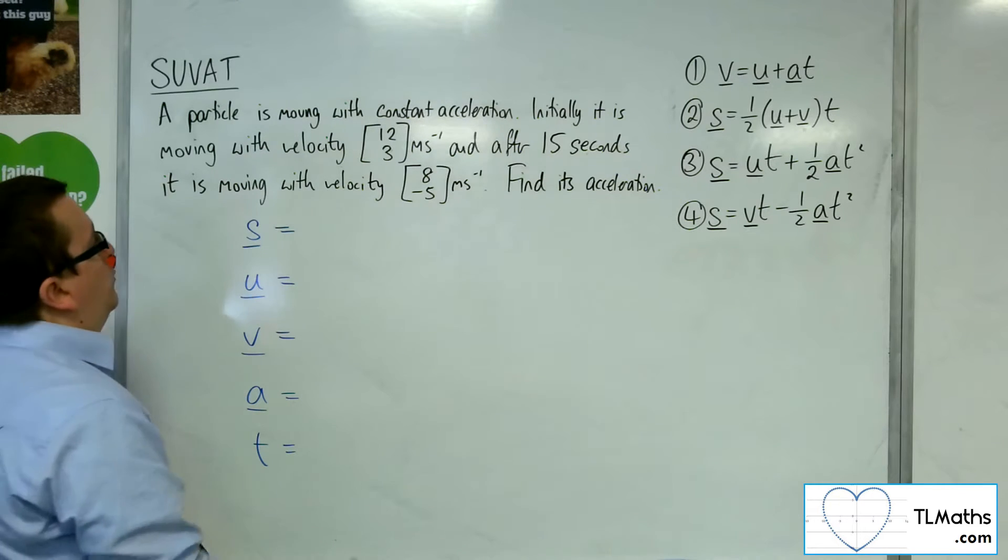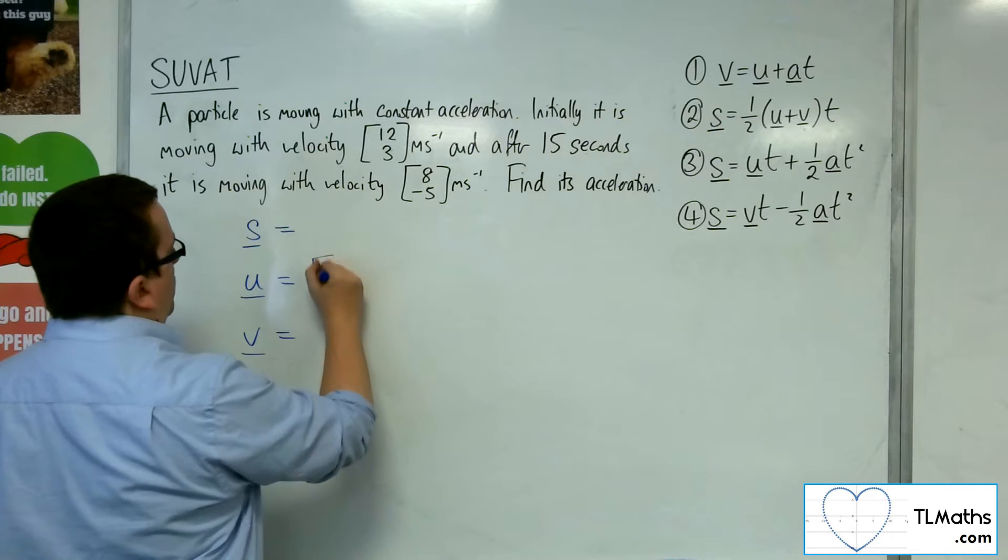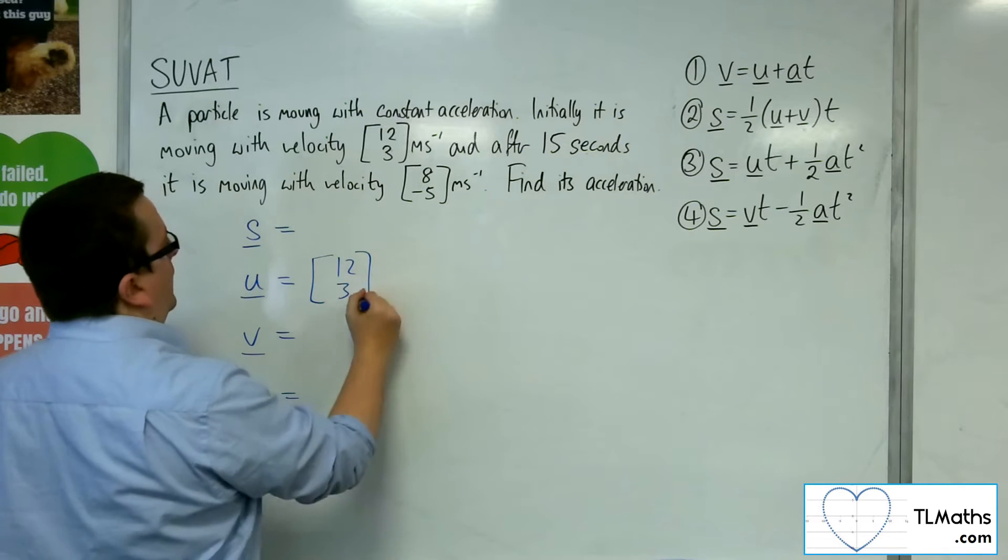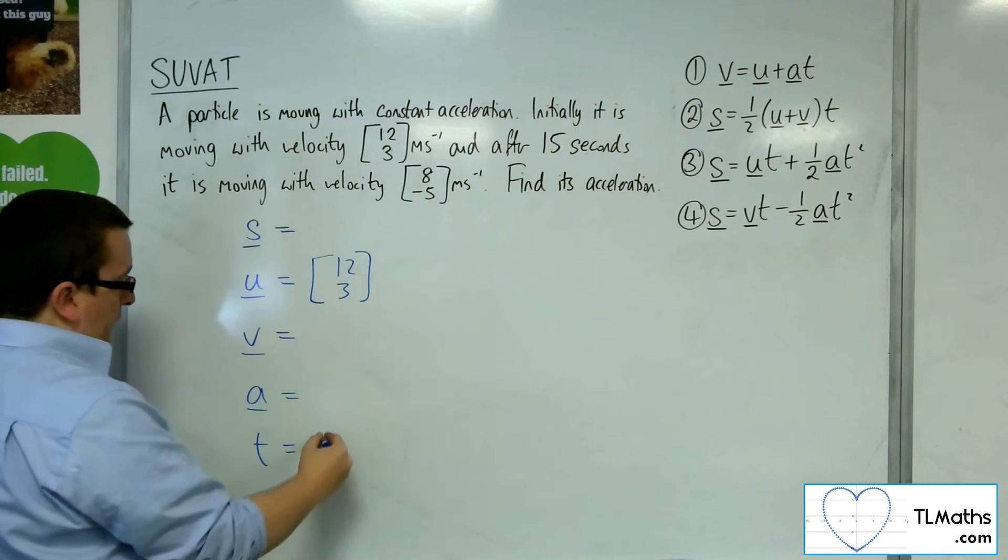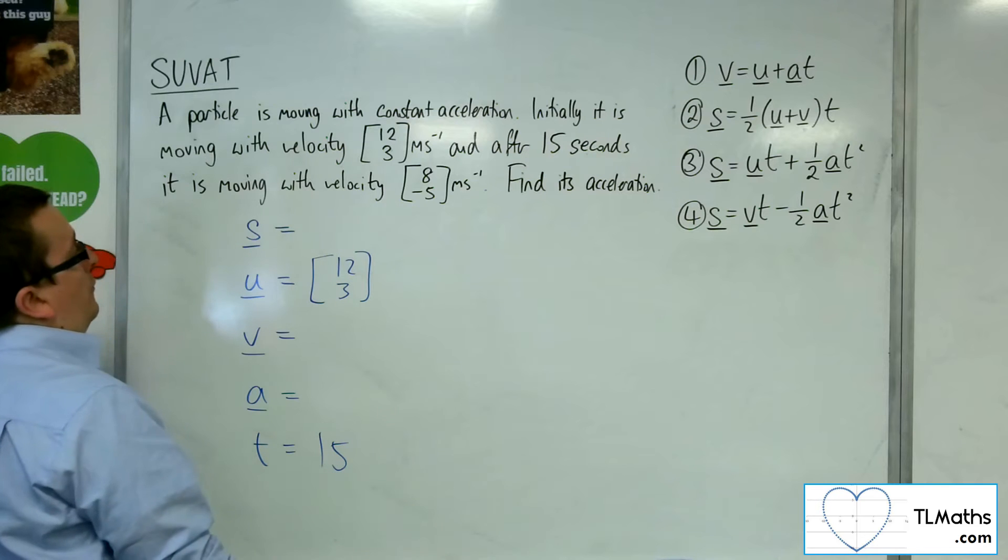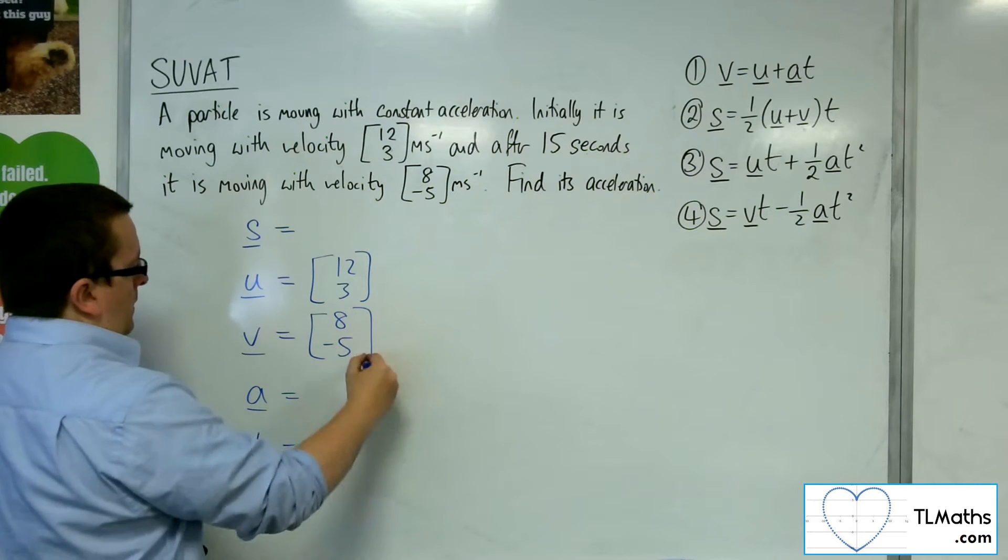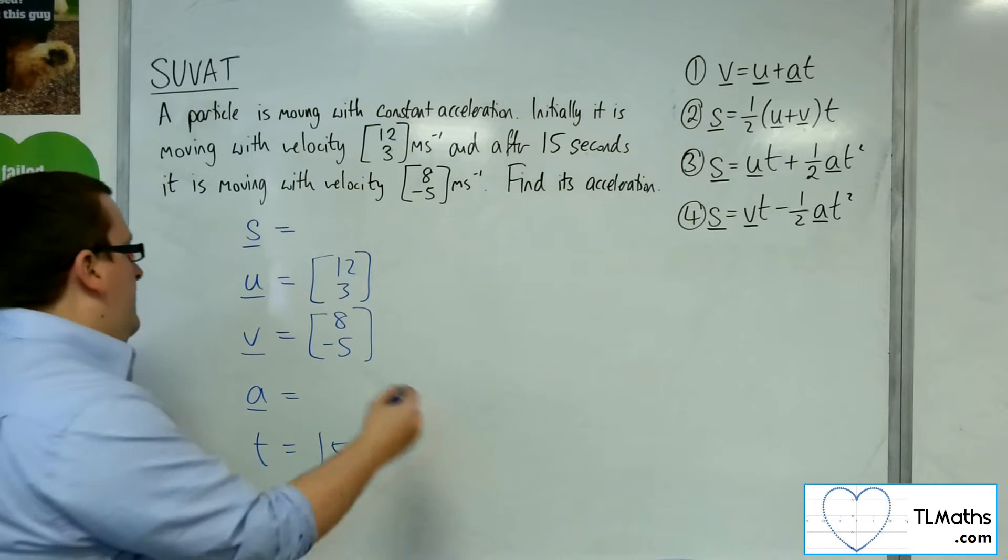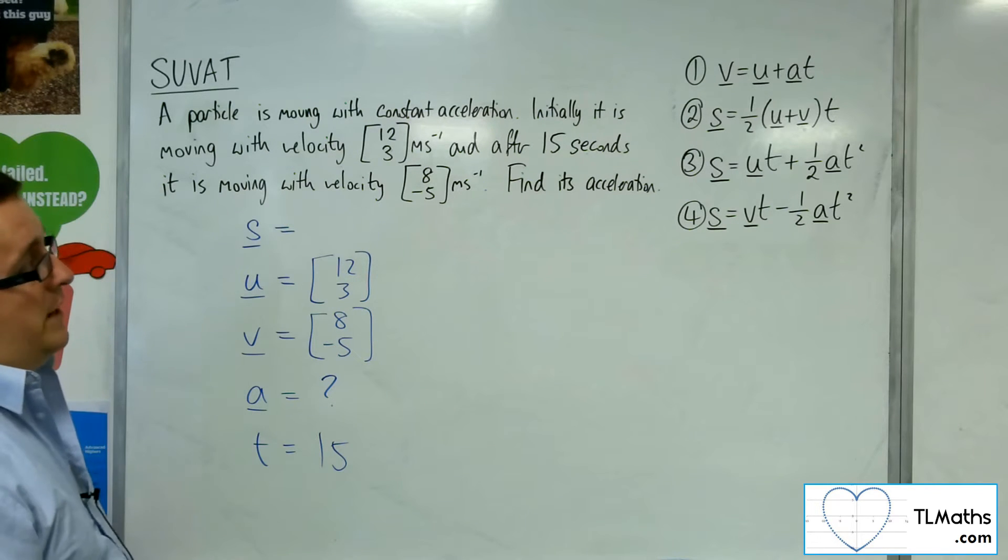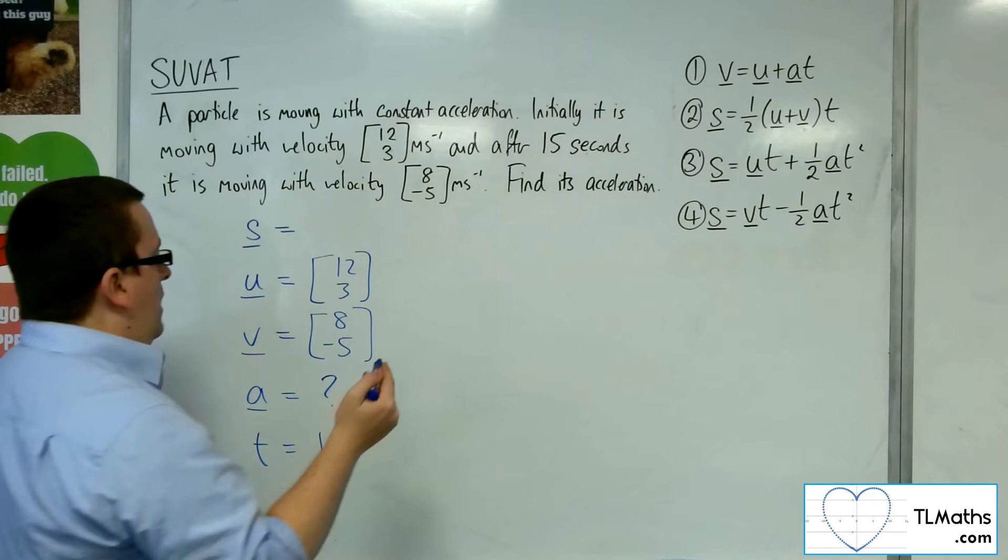Now we don't know the displacement. We know the initial velocity is 12, 3. We know it's after 15 seconds, and we know the final velocity is 8 minus 5. And what do we want to find? We want to find the acceleration. So, we use the equation that doesn't have s in it, and so that would be equation number 1.